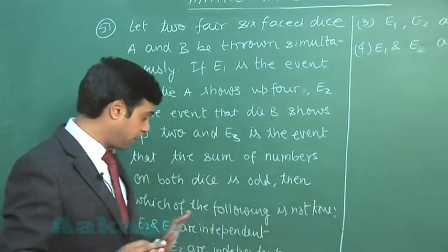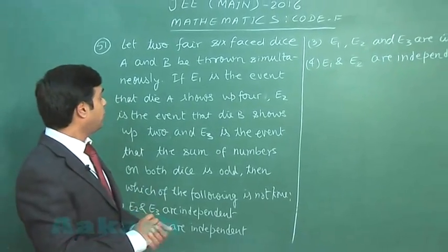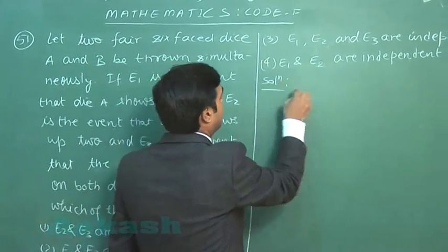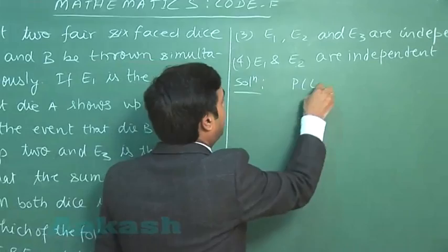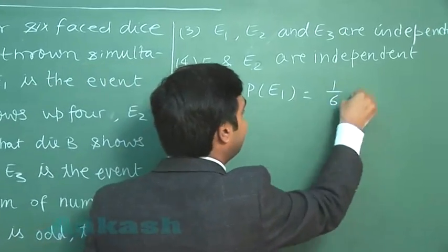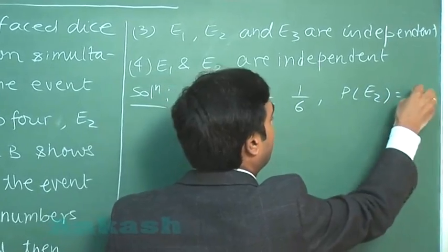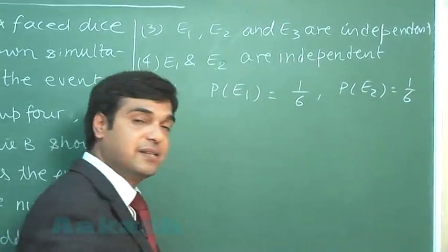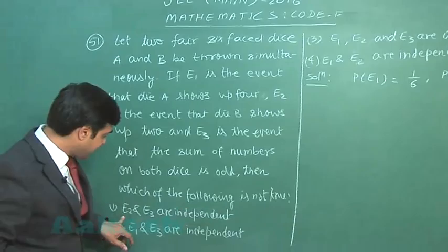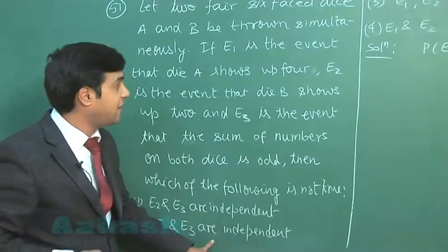Four options are given about E1, E2, etc. being independent. So probability of the event E1, that is showing up 4, clearly 1 by 6. Of E2 again 1 by 6. If we read the options, because we have to identify which one is not true.